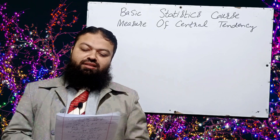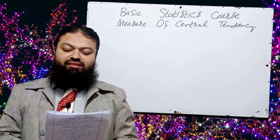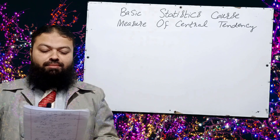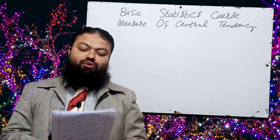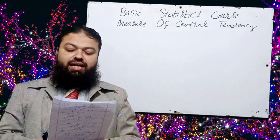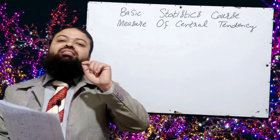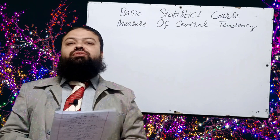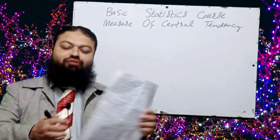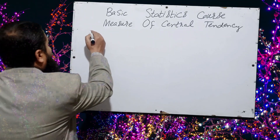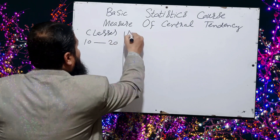Question number one: when we find the mean from grouped data, the major assumption is — A: each class contains an equal number of observations; B: all values are in whole numbers; C: no value occurs more than once; D: every value in a class is equal to the midpoint. Option D is the correct one — every value in a class is equal to the middle value.